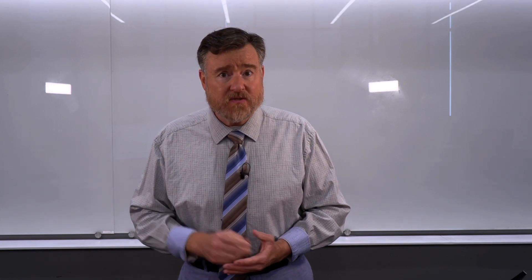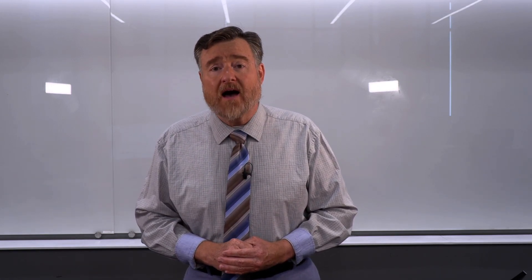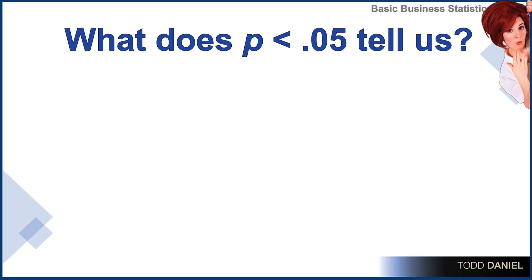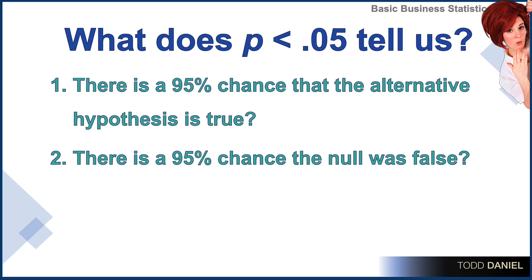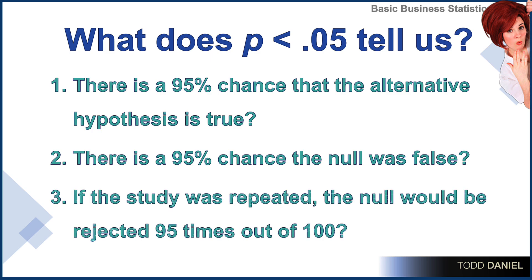Let me give you a quick quiz to see if you can figure it out. When we calculate a probability less than 0.05, does that mean that there is a 95% chance that the alternative hypothesis is true? Or does it mean that there's a 95% chance that the null hypothesis was false? Or does it mean that if the study was repeated, the null hypothesis would be rejected 95 times out of 100? Does that probability less than 0.05 tell us any of these things?